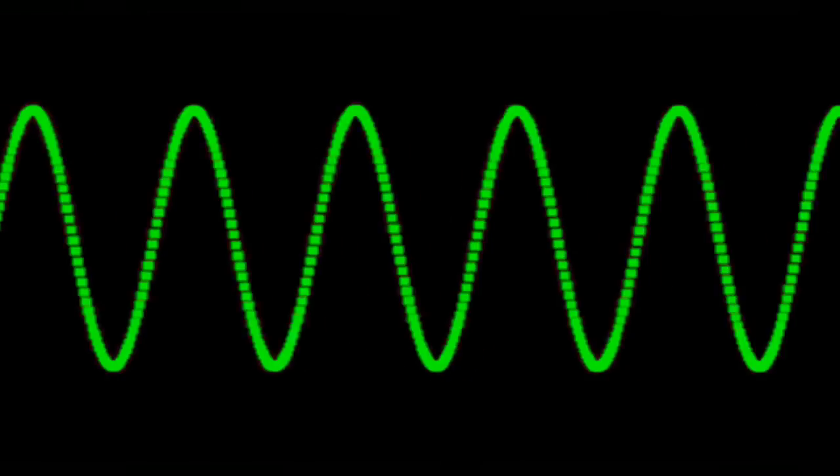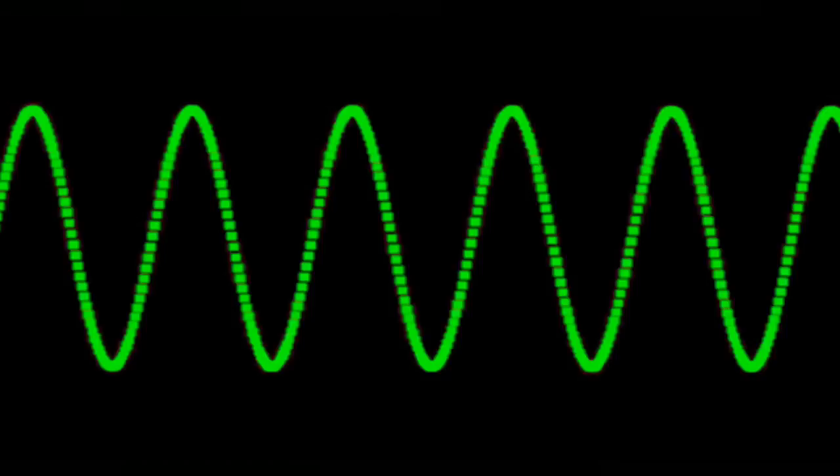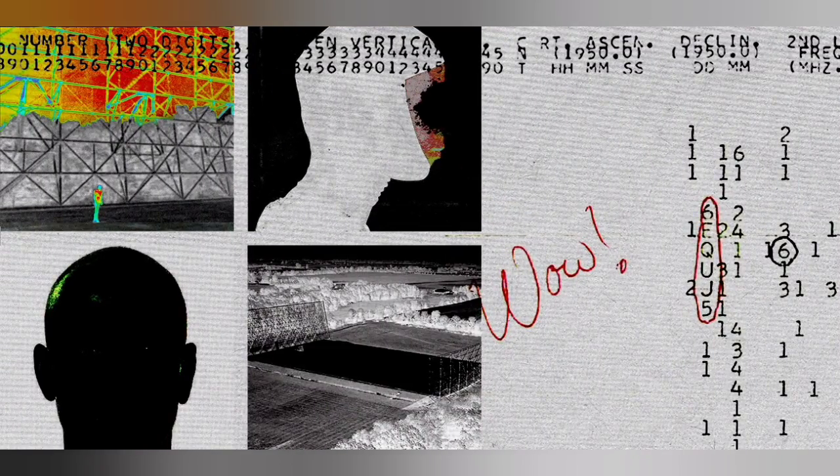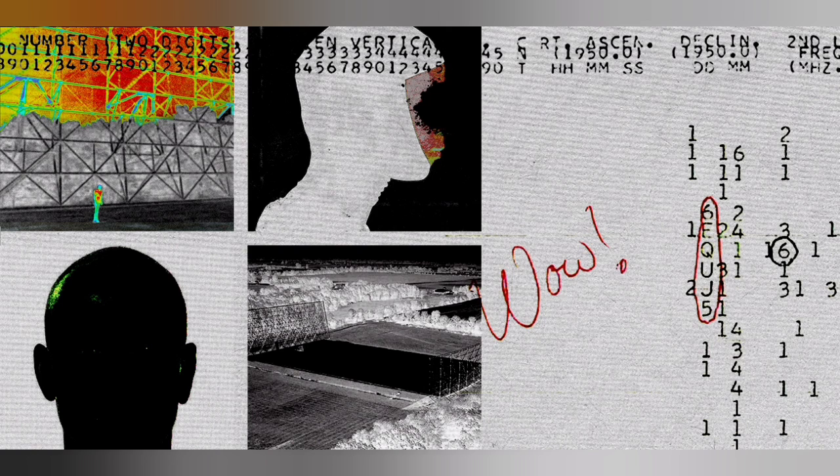The WOW signal was an extremely powerful narrow band radio signal detected in August of 1977 that could not be explained by any natural phenomena we were familiar with at the time.